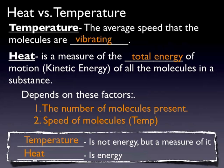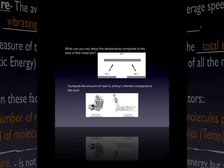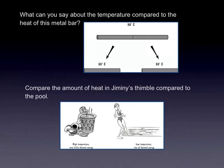You have two glass beakers on your paper — both at 40 degrees Celsius. Which has more heat? The bigger one, because there's more matter. If you have a metal bar at 30 degrees Celsius and cut it into two pieces, the temperature of each piece is still 30 degrees Celsius, but each section has half as much heat because it's half the size.